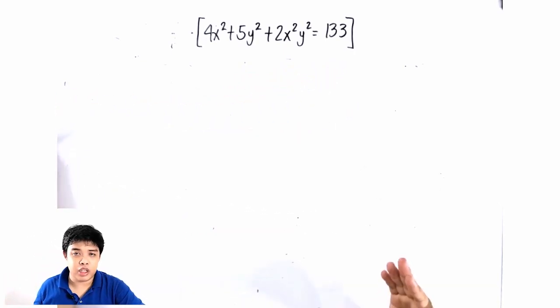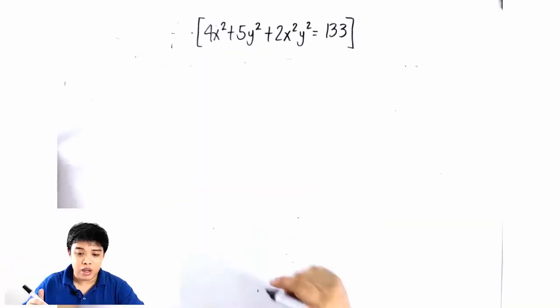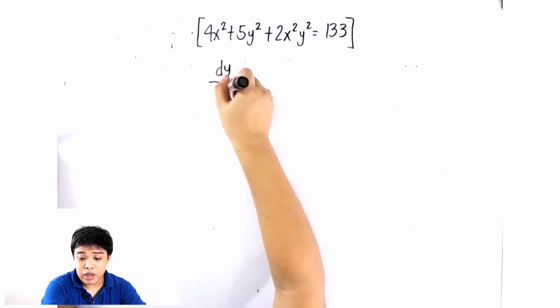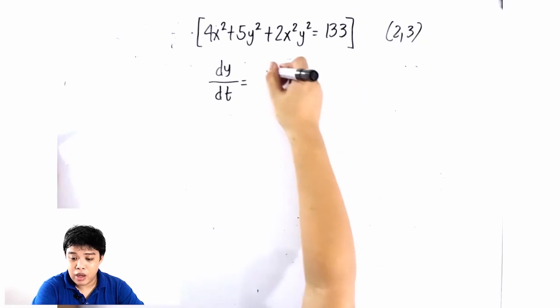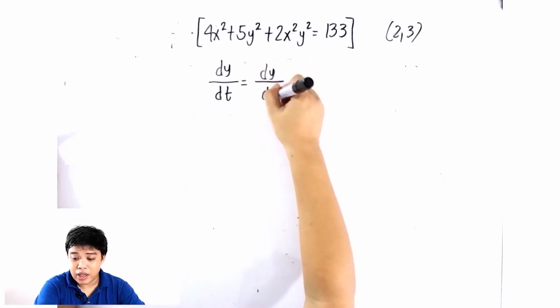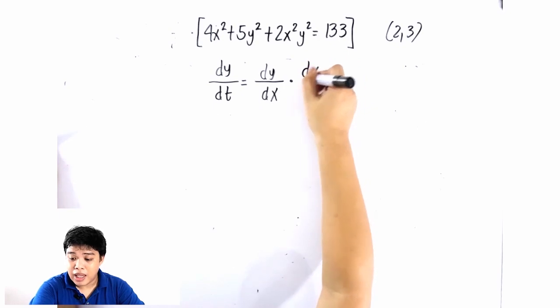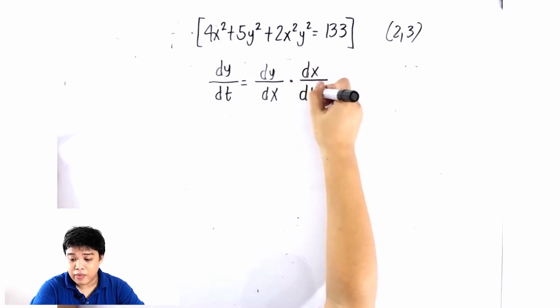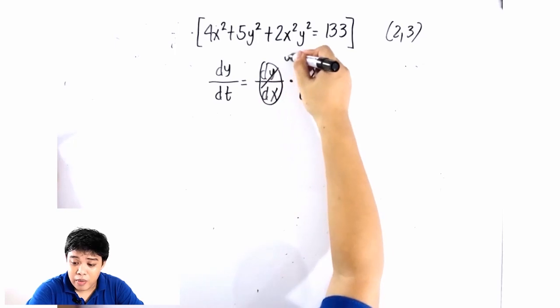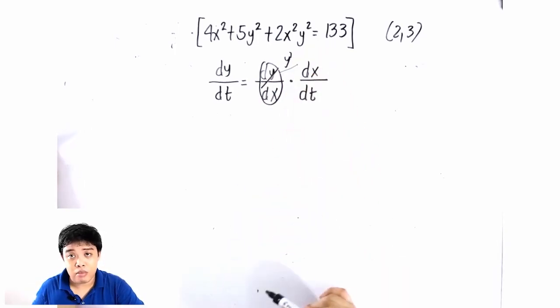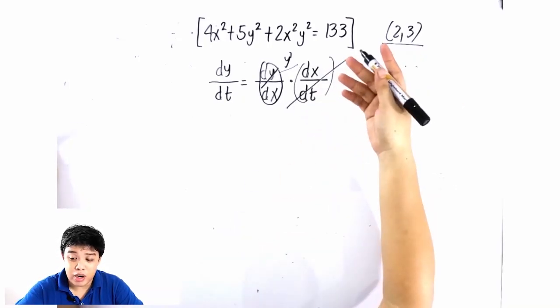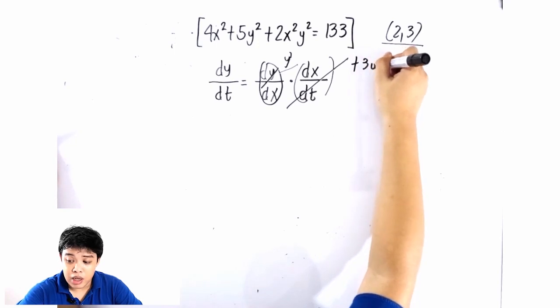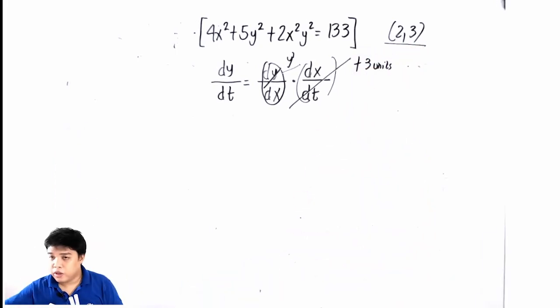Now, how do we apply our shortcut technique? Performing implicit differentiation manually is a very long and tedious process. The technique uses the chain rule: dy/dt = (dy/dx) · (dx/dt). You just find y′ at the point (2, 3) and multiply it by the given constant dx/dt = +3 units per second.